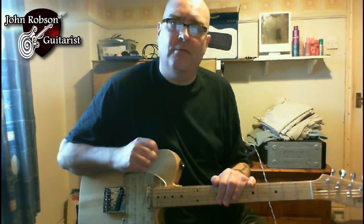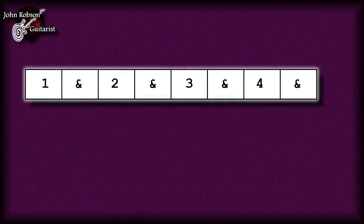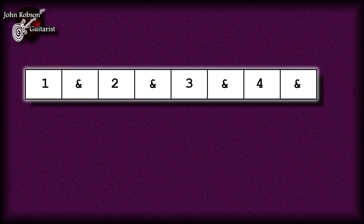It's all about keeping a constant, fluent, relaxed down-up motion that is in time with the pulse of the music. Let's take a basic rhythm with four beats to the bar, where each beat is divided into two equal parts. This is how that would be counted: one and two and three and four and. And this is how you would strum that rhythm using down and up strokes.